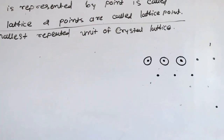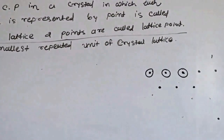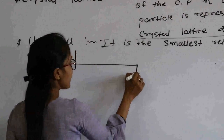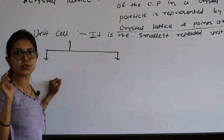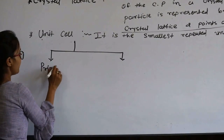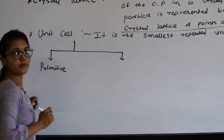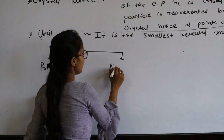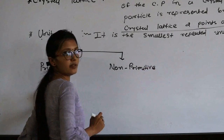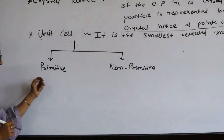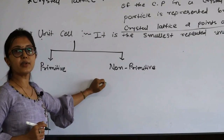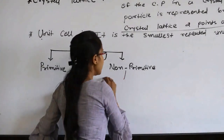Now, how many types of unit cells are there? The classification of unit cells — types of unit cell — is divided into two types: the first one is the primitive unit cell, and the second one is the non-primitive unit cell.